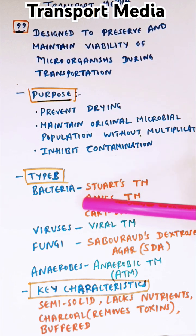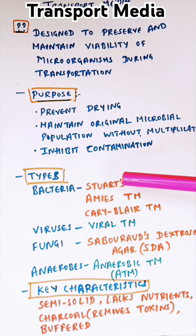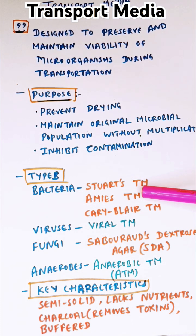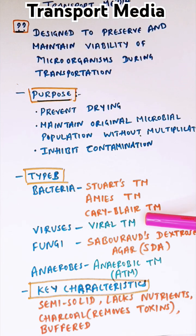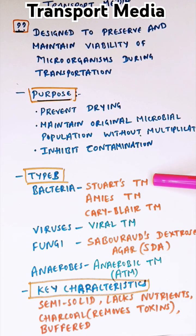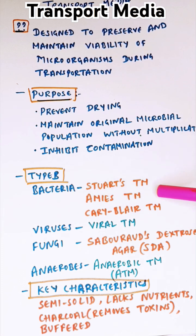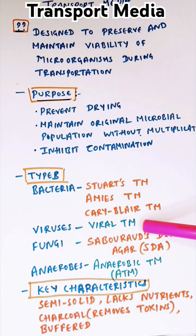There are many different types depending on the organism to be transported. For bacteria, we commonly use Stuart's transport media, Amies transport media, and Cary-Blair transport media. Cary-Blair is mainly for enteric pathogens like Salmonella and stool samples from diarrhea patients. Stuart's transport media is mainly used for gonococci, and Amies transport media is used for throat, wound, or urogenital samples.